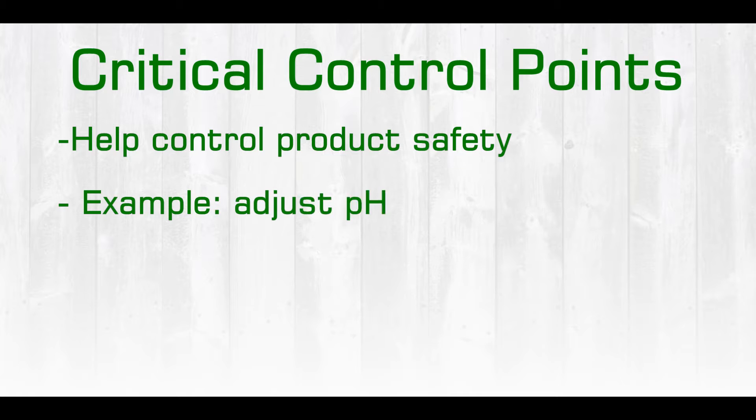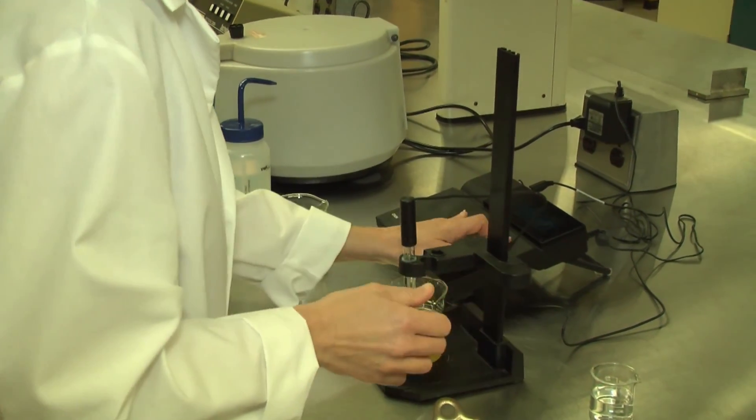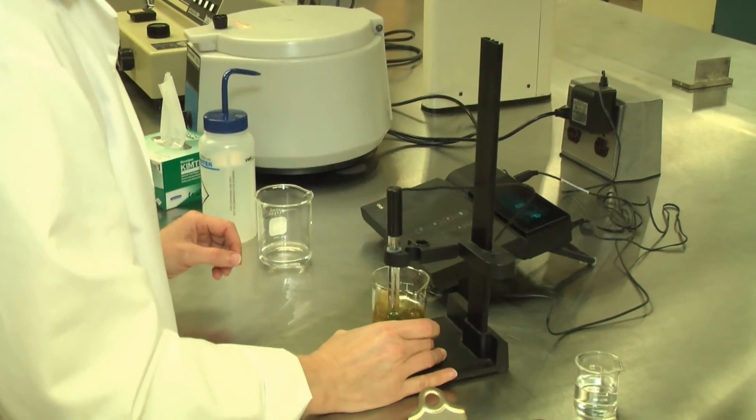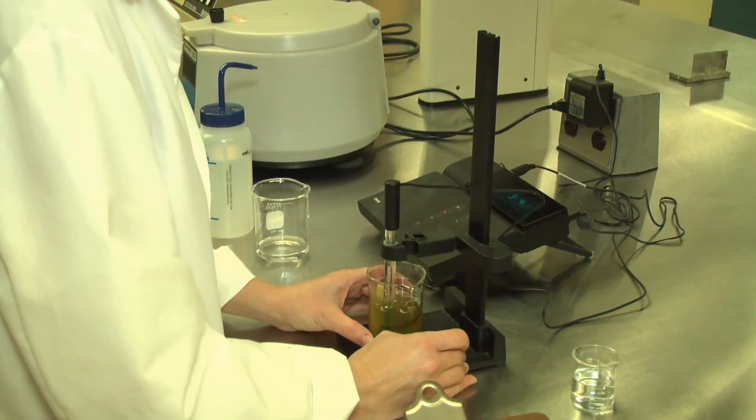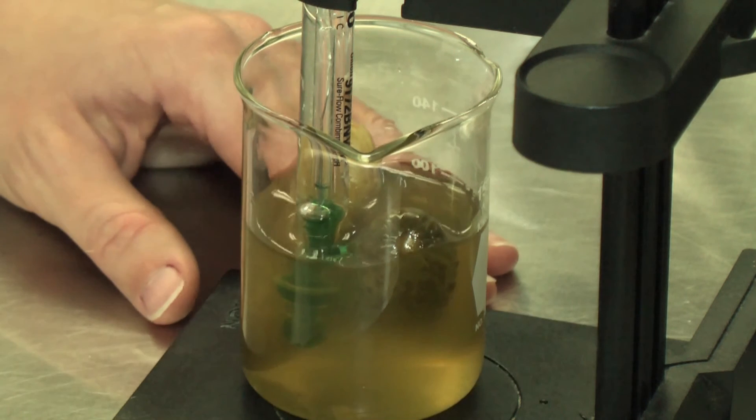Another example would be, since we know the bacteria require a certain pH range in order to grow and thrive, we can adjust the pH of a food product by adding certain ingredients or fermenting the product and lowering the pH. This creates an unfavorable environment for the bacteria and prevents them from growing.